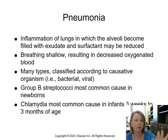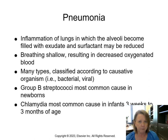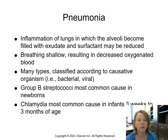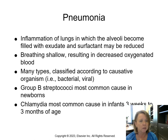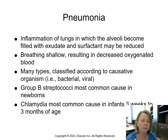Pneumonia is inflammation of the lungs in which the alveoli become filled with exudate. Surfactant, which provides pliability to our lungs and enables oxygen exchange, may be reduced. Breathing can be shallow, resulting in decreased oxygenated blood. There are bacterial and viral pneumonias. Group B streptococci is the most common cause in newborns; Chlamydia is the most common cause in infants three weeks to three months old.